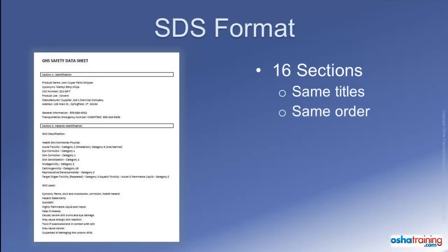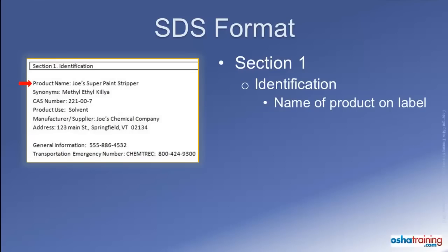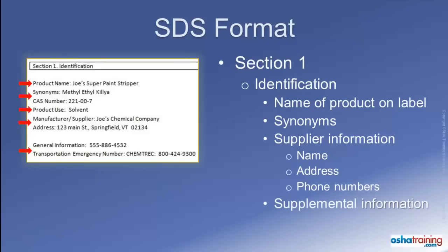Now let's take a look at the information that must appear on GHS-compliant safety data sheets, starting with Section 1. Section 1 is titled Identification. This is where you will find the name of the product as it appears on the container label, and in some cases applicable synonyms or chemical classification codes used for the product. You will also find supplier information, including the name of the manufacturer or distributor, their address, and emergency contact number. On some safety data sheets, you may also see supplemental information such as the intended use, directions for use, and possibly an expiration date. All this information must match that appearing on the container label.